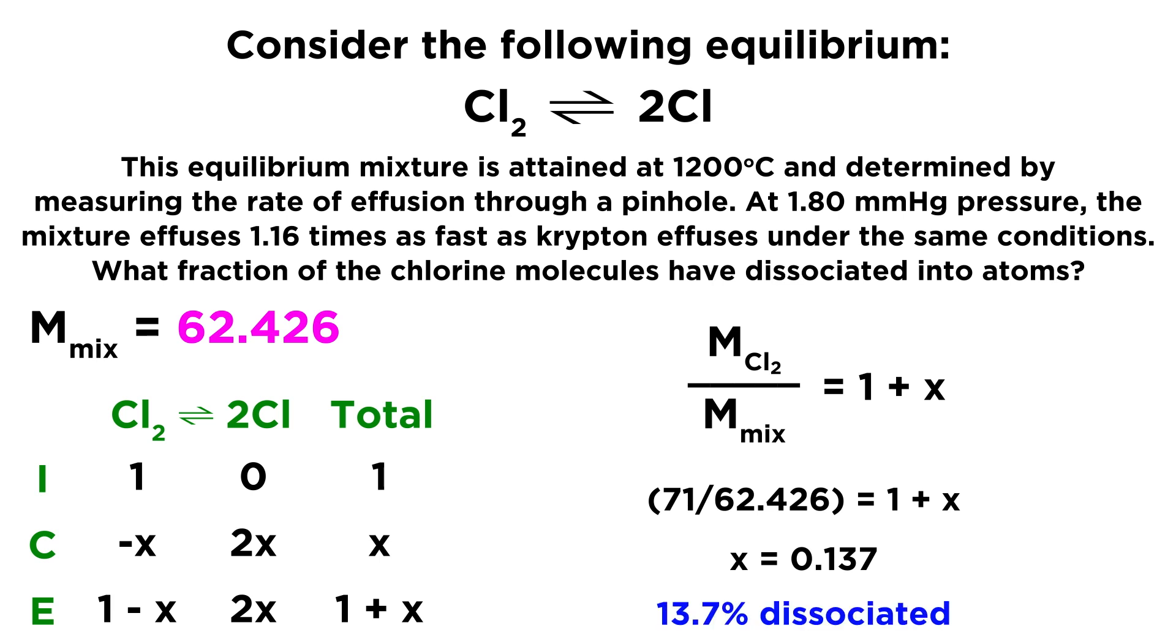And that means that 13.7% of the chlorine molecules have dissociated to produce chlorine radicals, which is what gives us that reduced average molar mass that is lower than the molar mass of diatomic chlorine. So there's a little bit of practice regarding Graham's law of effusion as well as equilibria to look at this system.